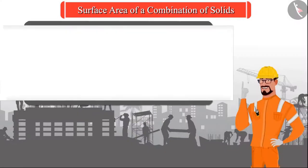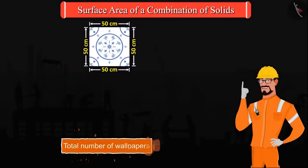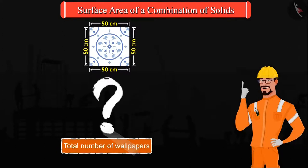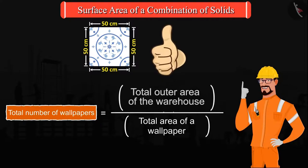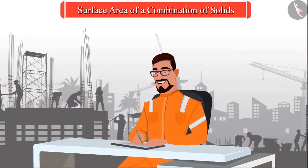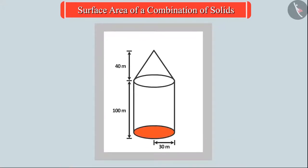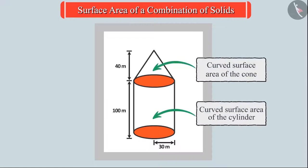The engineer first finds the total area of a wallpaper. To find the total number of wallpapers, the total outer area of the warehouse is to be divided by the area of one wallpaper. Using the given measurements, the engineer makes a rough picture of the warehouse. He sees that the wallpaper will not be placed on the base of the warehouse or the part where the cone and the cylinder meet, so he needs to find the curved surface area of the cone and the cylinder.